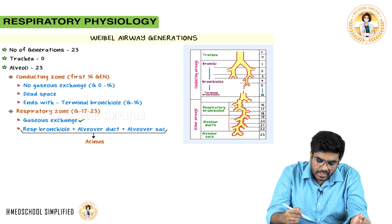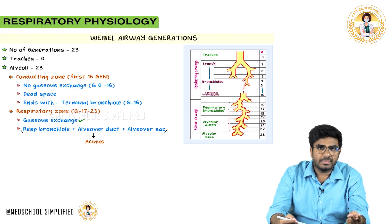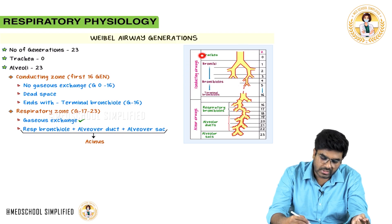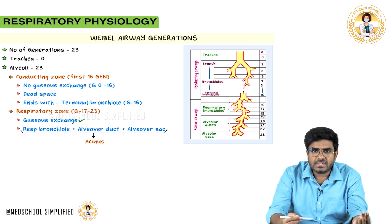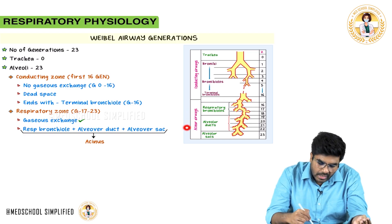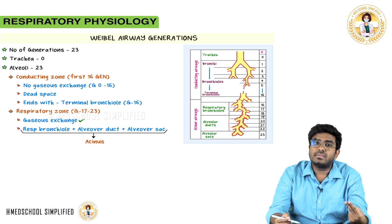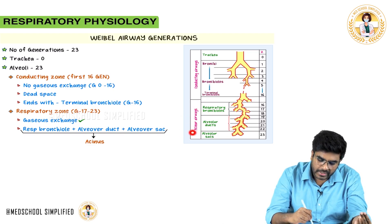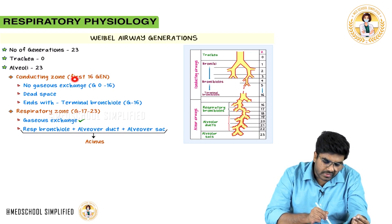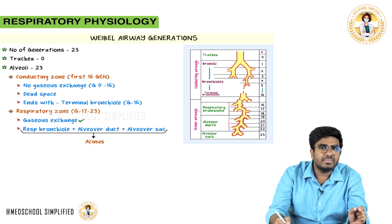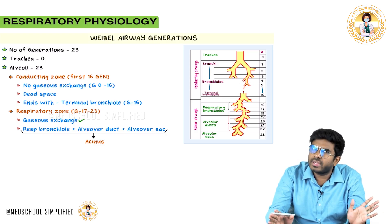Now let's divide the entire respiratory tract into two parts based on function. The first 16 generations are called the conducting zones or conducting airways. From generation 17 to 23 are called the respiratory zone. The conducting zone has no gaseous exchange — airways are being conducted but there is no exchange of oxygen or carbon dioxide.